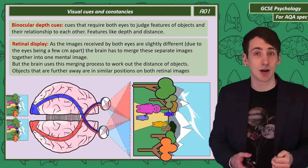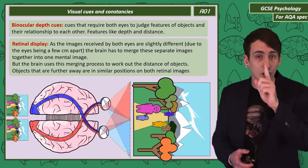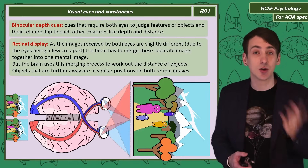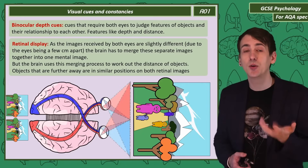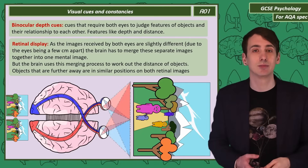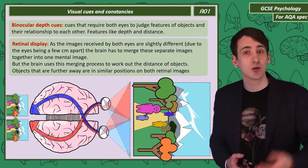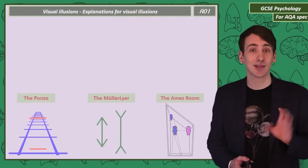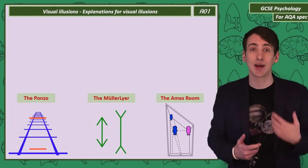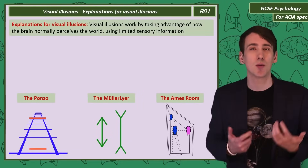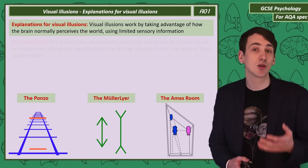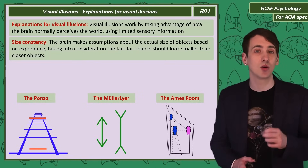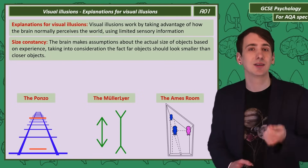You can see this for yourself using just your finger. Hold it close to your eyes and then open and close each eye quickly. You should see that your finger jumps from side to side, but objects on the other side of the room shouldn't move as much. So let's match some of the aspects of perception we've just learned to the visual illusions. All visual illusions take advantage of the fact that the brain's perception is based on assumptions from limited visual information — it assumes far-away objects are smaller than closer ones, which is called size constancy.